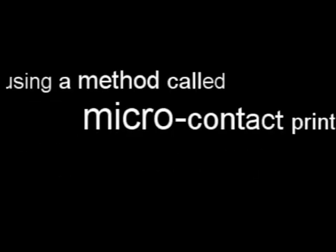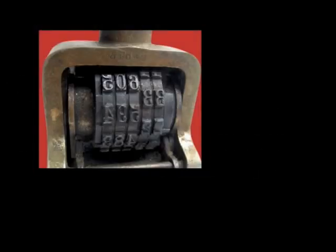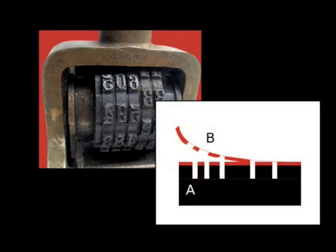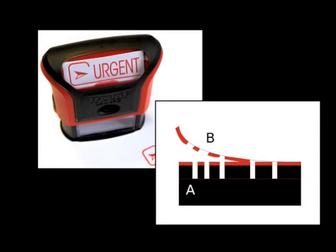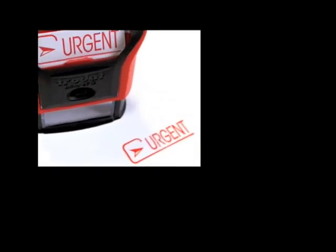These shapes can then be placed in specific locations using a method called micro-contact printing, which works very similar to a stamp. When the stamp comes in contact with a surface that is attractive to DNA, the DNA is transferred to all places where the stamp is raised and not to places that are recessed, much like ink on a real stamp.